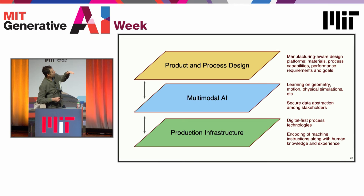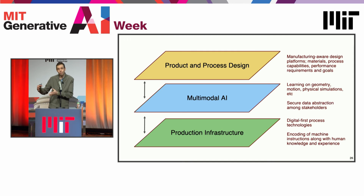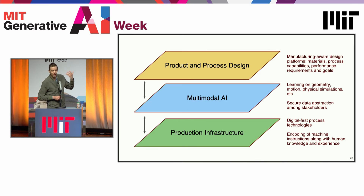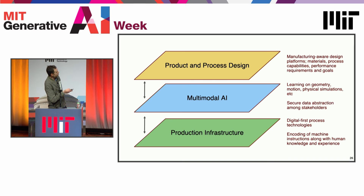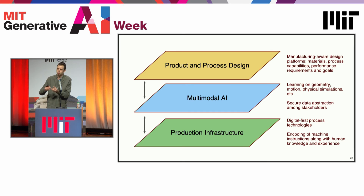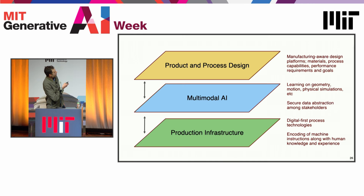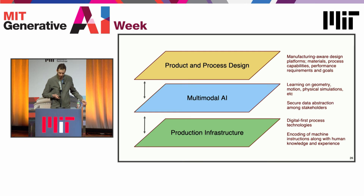To start to stitch these things together, from my perspective as a mechanical engineer, I think we need truly manufacturing-aware design platforms that consider materials, process capabilities, and performance requirements and goals. We need more digital-first process technologies that allow us to encode the instructions of production — not just the geometry, but the instructions of how to create components and how to fit them together. And the in-between is absolutely fascinating: what will emerge from the multimodal AI models of the future.